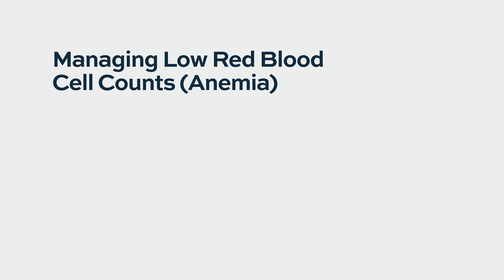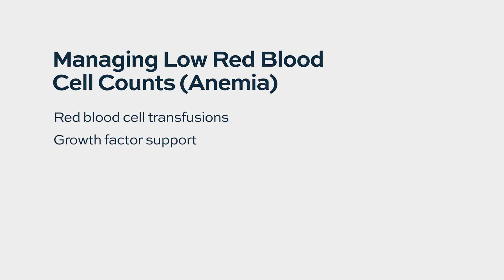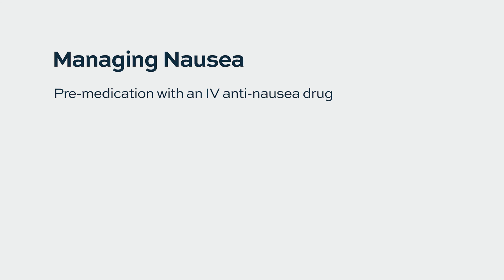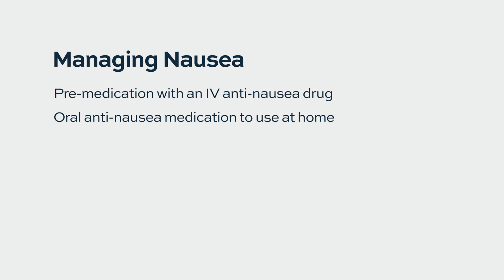Low red blood cell counts or anemia is managed with red blood cell transfusion and sometimes with growth factor support. For non-hematologic side effects of melphalanflufenamide, an anti-nausea medication is given as part of the pre-medications for administration. It is given intravenously through a central venous catheter — for example, through a port — once every four weeks. Patients are also provided with an anti-nausea medication to take on an as-needed basis at home.